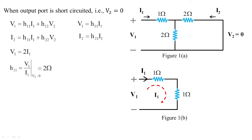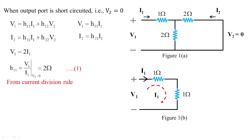The unit is ohms because voltage divided by current is impedance. Now let us find the value of i2 in terms of i1. Looking at Figure 1a, i2 can be obtained from the current division rule.